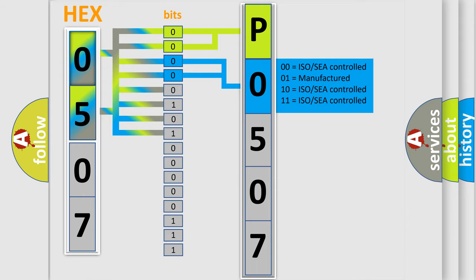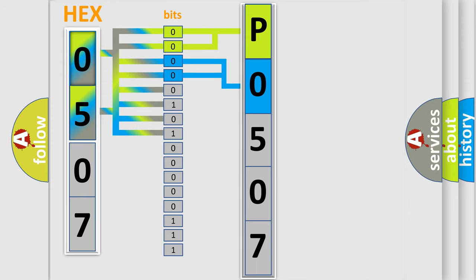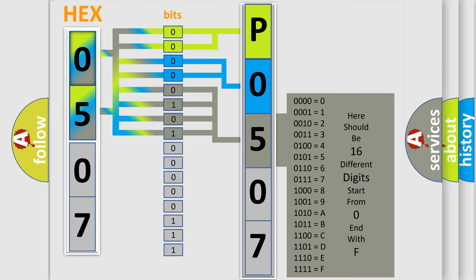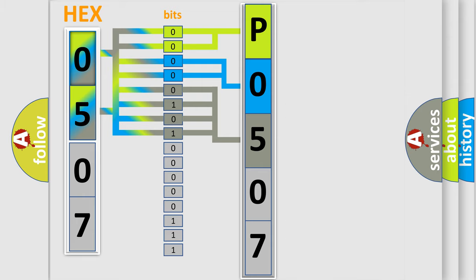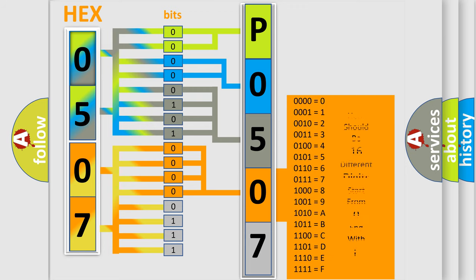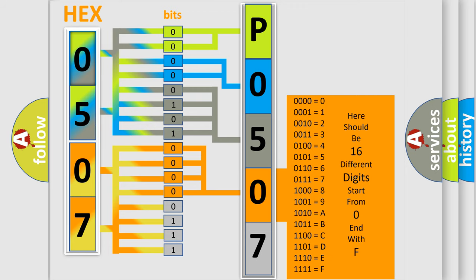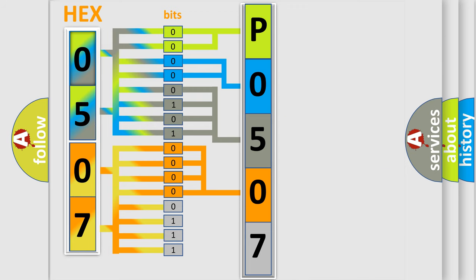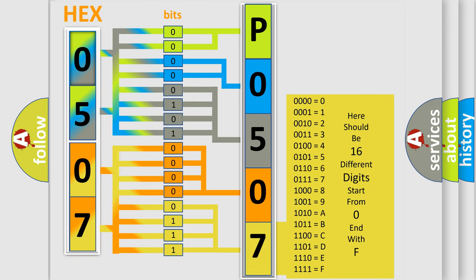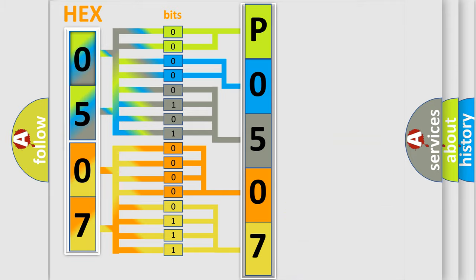The last bits of the first byte define the third character of the code. The second byte is composed of a combination of eight bits. The first four bits determine the fourth character of the code, and the combination of the last four bits defines the fifth character. A single byte conceals 256 possible combinations. We now know how the diagnostic tool translates received information into a more comprehensible format.